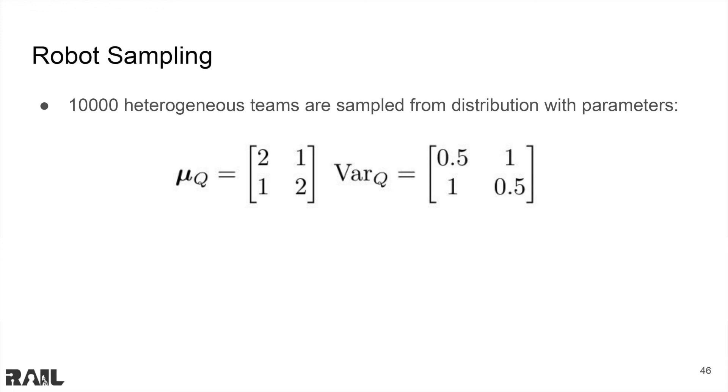We sample the robot team 10,000 times according to the distributions shown here. We then assign the robots to their teams using the risk adaptive, neutral, sensitive, and random baselines. We then simulate the robot tasks and calculate the success rate.